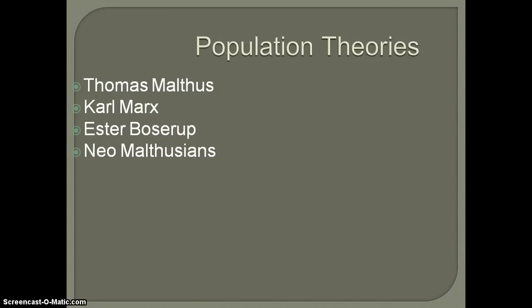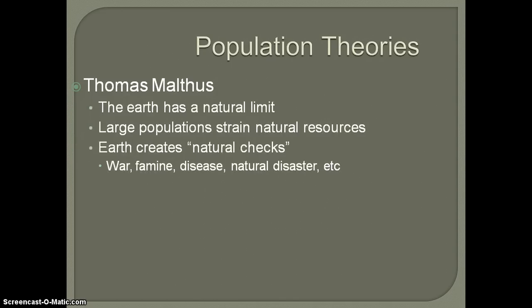The first person we're going to talk about is Thomas Malthus. He tends to be one of the more famous population theorists — really one of the first. He starts to write widely about his concerns about potential population problems. You have to consider his time period: he's living during the Industrial Revolution and seeing a tremendous amount of growth in the population, especially in England.